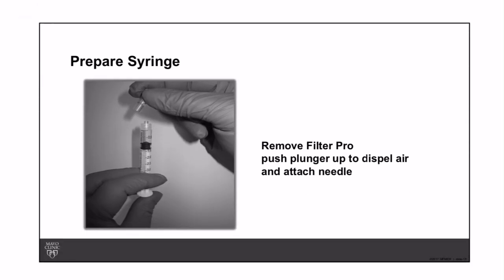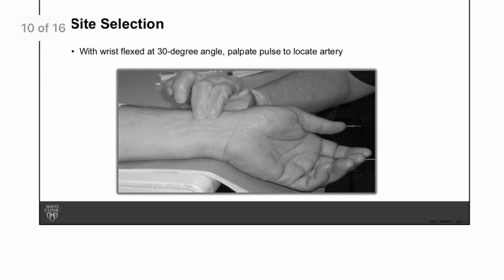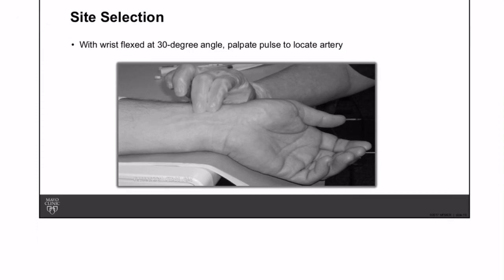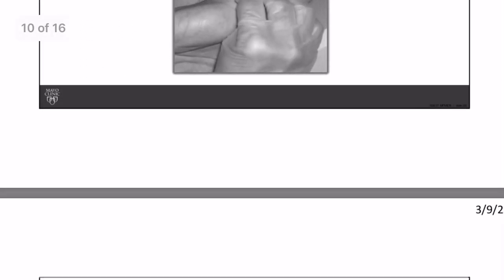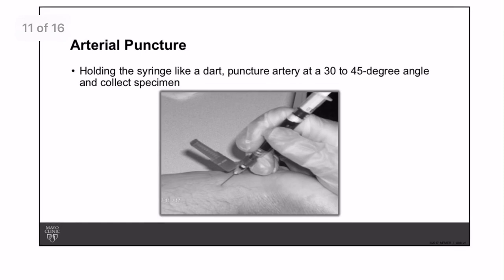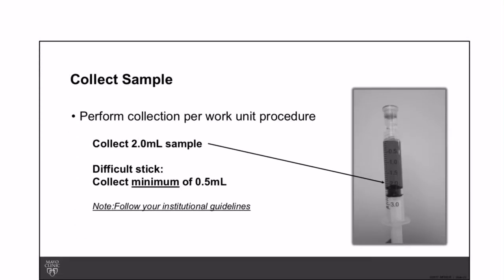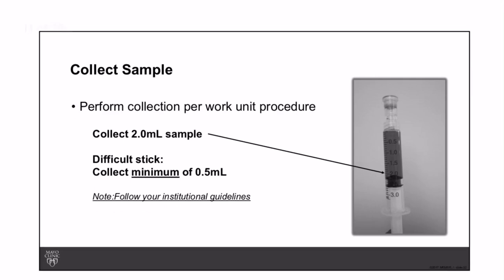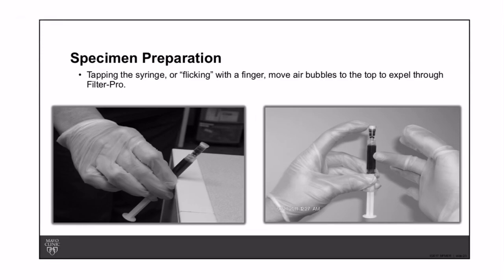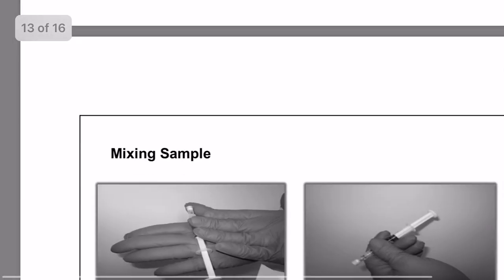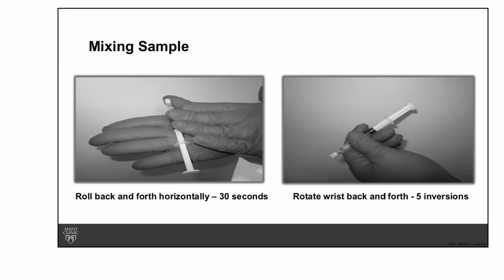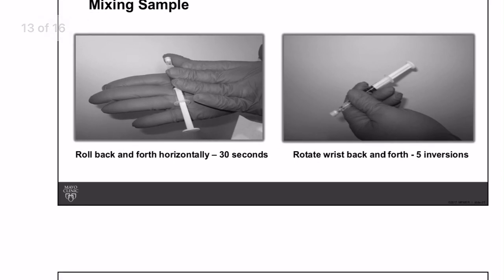To prepare the specimen: prepare the syringe by removing the filter cap, push the plunger to expel air, and attach the needle. Collect normally 2 mL; the minimum acceptable is 0.5 mL. After collection, tap or flick the syringe to move air bubbles to the top and expel them through the filter cap. Mix the sample by rolling the syringe back and forth horizontally for 30 seconds, then rotate the wrist back and forth for five inversions.